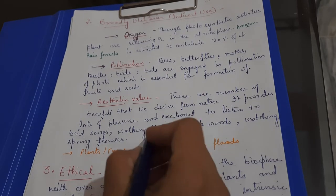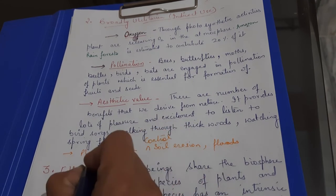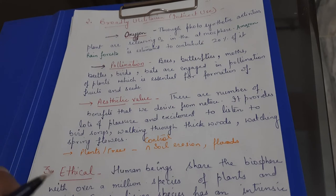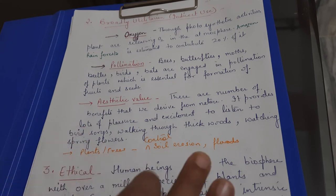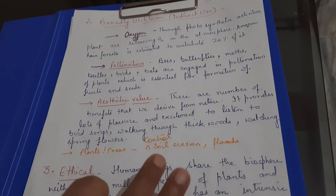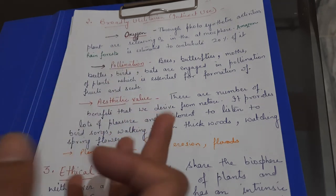Floods, soil erosion can be controlled, which is the control of plants and trees. So if forest cover or plant cover does not exist, then the bottom of the soil will be flooded with floods and so on. So this is under the category of broadly utilitarian. Let's take another example.